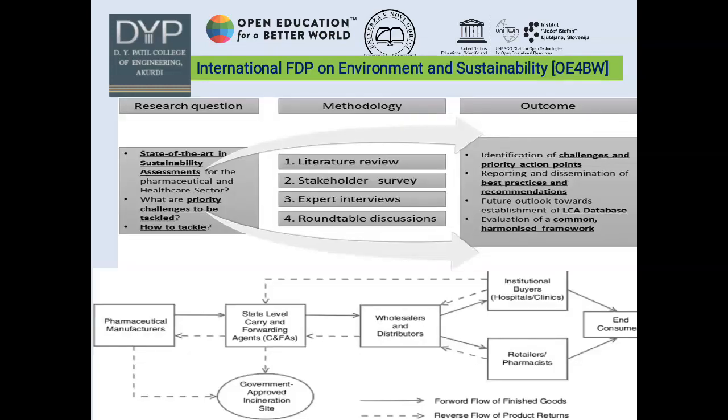These are the various approaches for the reduction of carbon emissions useful for the environment and sustainability. The first is a research question on the state of the art in sustainability assessment, and checking priorities to tackle. Various methodologies applicable include literature review, stakeholder survey, expert interview, and round table discussion. Outcomes include challenges and priorities, action points, identification, reporting and dissemination of best practices and recommendations, LSE database, and evaluation of a common harmonized framework.